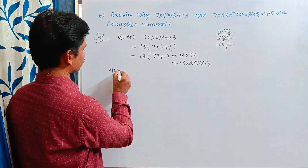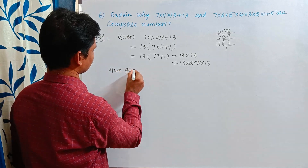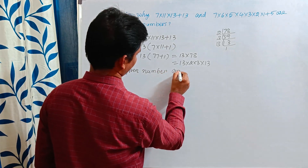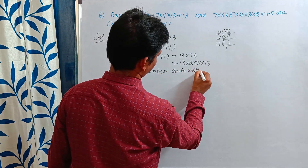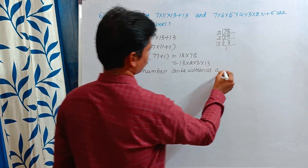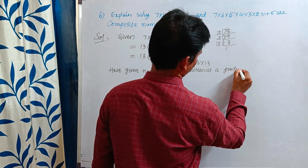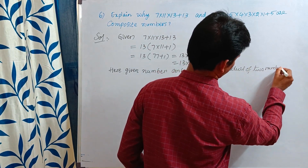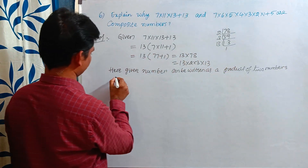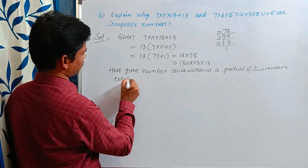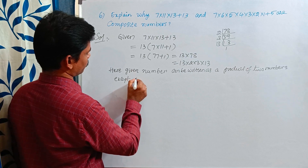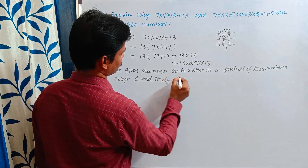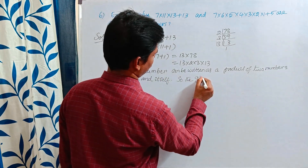The given number can be written as a product of two numbers except 1 and itself. So the given number is a composite number.